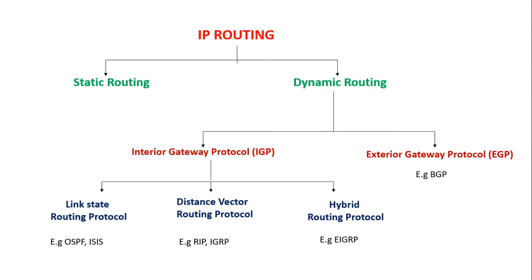Interior Gateway Protocols are further classified into three types: link state routing protocol, distance vector routing protocol, and hybrid routing protocol. Link state routing protocol is a type of IGP used to share routing information within an autonomous system. When routers use this type of protocol, the entire network topology is known to all routers, and updates are only shared if there are changes in the network. The best examples are OSPF and IS-IS, and it has fast convergence compared to others.